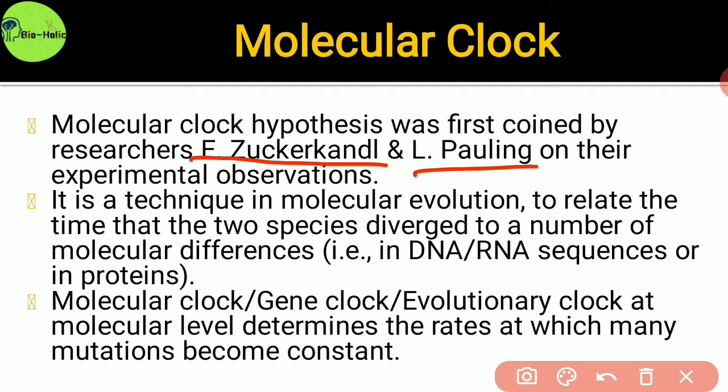The number of amino acid modifications in the line of descent can be used as a measure of the time of divergence of two different species from a common ancestor. The molecular clock — also called the gene clock or evolutionary clock — determines the rate at which mutations become constant. Greater mutational differences create greater evolutionary distance between organisms from their ancestral lineage, and the rate of accumulation of mutational changes in genomes and proteins will always remain constant over a period of time.